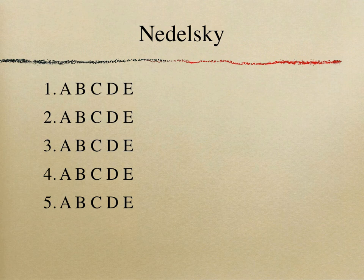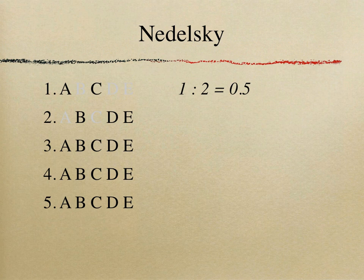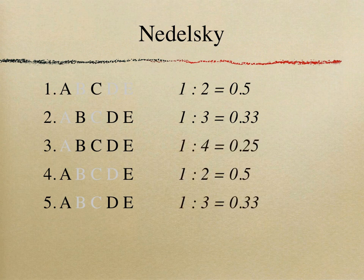Imagine a paper with five SBA or MCQ questions. In the first question the candidate could eliminate three distractors, leaving one out of two — so 0.5 probability. In the second, they could eliminate two distractors, giving one out of three. Continuing: the third has one out of four, the fourth one out of two, and the fifth one out of three.